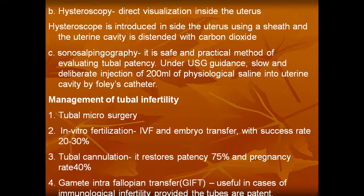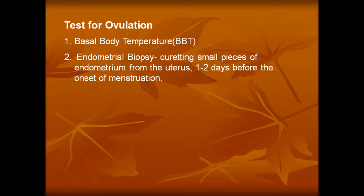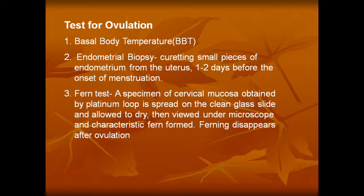Tests for ovulation include basal body temperature, endometrial biopsy — curetting small pieces of endometrium from the uterus one to two days before the onset of menstruation — and the fern test. A specimen of cervical mucosa is obtained by a platinum loop, spread on a clean glass slide, allowed to dry, then viewed under the microscope. A characteristic fern pattern is formed.